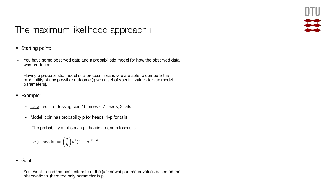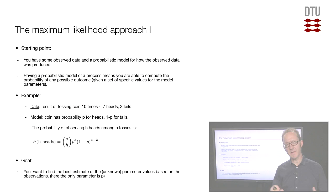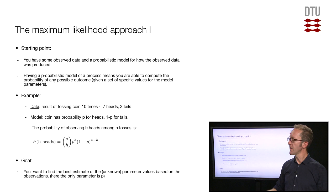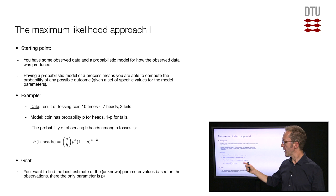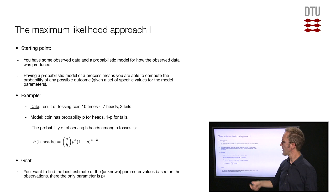The starting point in a maximum likelihood analysis is that we have some observed data and a particular model of how the system works. That model is what we call a probabilistic model — it allows you, for any possible dataset and any possible set of parameter values, to compute the probability of the data you actually got, and also the probability of any other dataset you might have gotten.